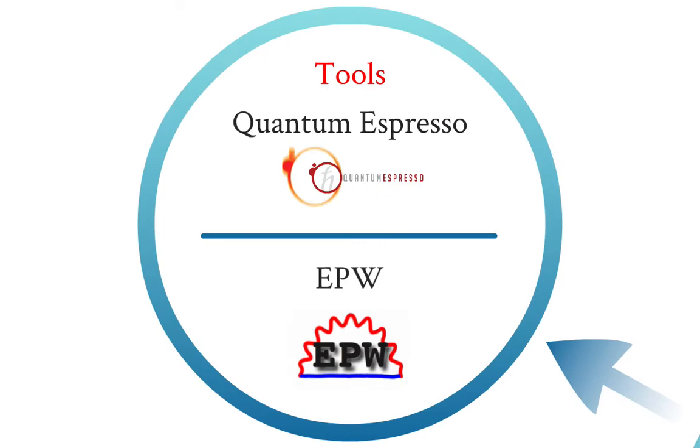The tools that we use in the project are Quantum Espresso and EPW. Quantum Espresso is a first-principles calculations tool to do the electronic structure and phonon calculations. EPW uses the outputs of Quantum Espresso and calculates the electron-phonon coupling constants. They are both free and open source.